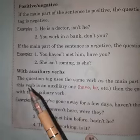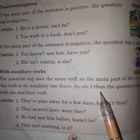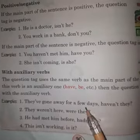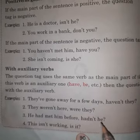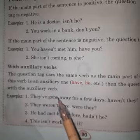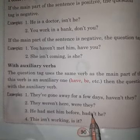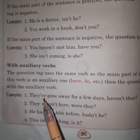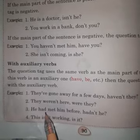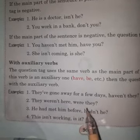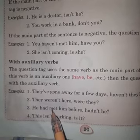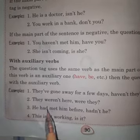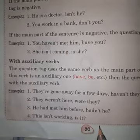With auxiliary verbs, the question tag uses the same verb as the main part of the sentence. For example: 'They have gone away for a few days, haven't they?' 'They were not here, were they?' 'He had met him before, hadn't he?' So whatever verb is used in the main sentence — have, were, had, is — the same verb is used in the question tag, made negative or positive as appropriate.